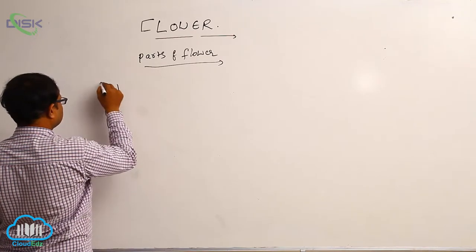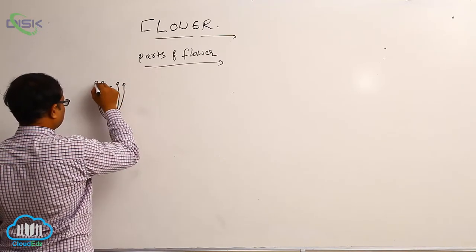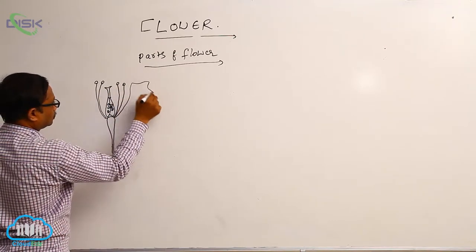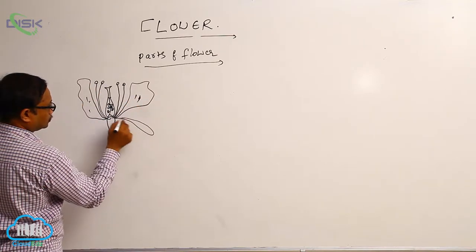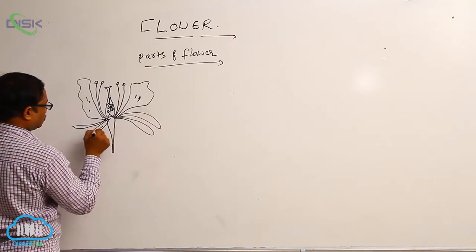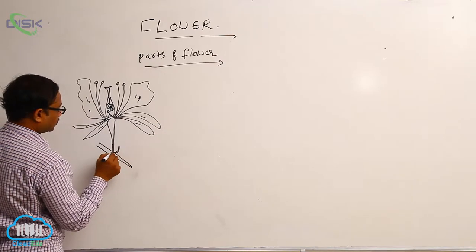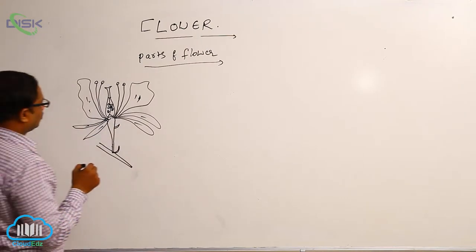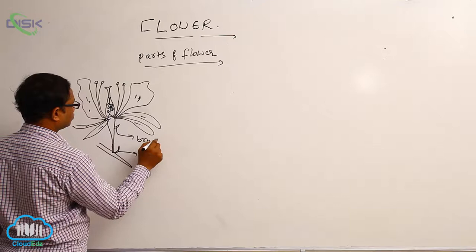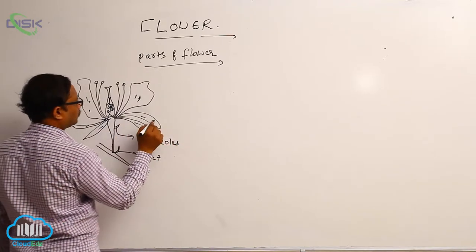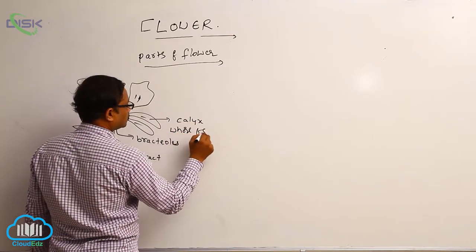These are the stamens. After that, corolla. This is known as the calyx. So it is the bract, and these are the bractioles. In parts of flower, the whorl of sepals is known as the calyx.